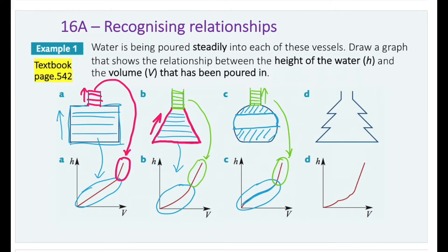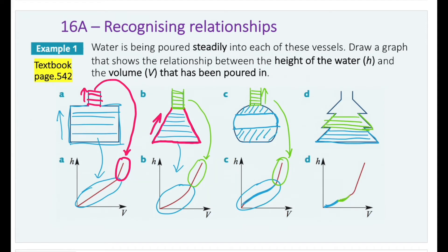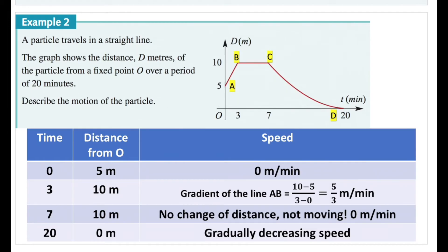In part d we have a zigzag-shaped vessel, and if you look at the graph we have wiggly lines. The bottom part of the vessel is much wider and corresponds to the first curve, which is increasing at a slower pace. As we move up, the middle part corresponds to the second curve, increasing slightly faster because it's narrower. Moving up further, this section corresponds to a narrower part, and up until we return to a regular cylindrical shape, which gives us a linear relationship.